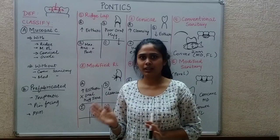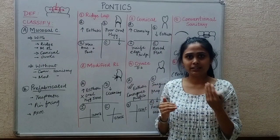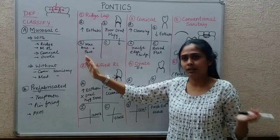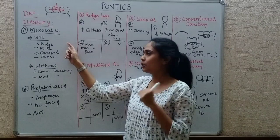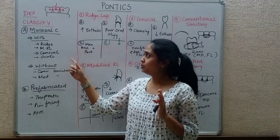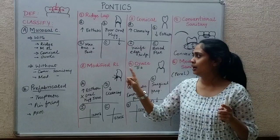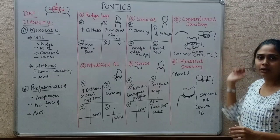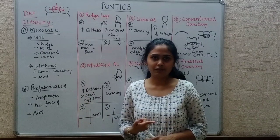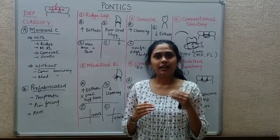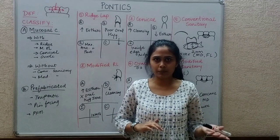Quick recap: the definition — it is an artificial tooth which replaces a missing tooth, restores its function, and fills the space previously filled by a natural tooth. Classification based on mucosal contact: with mucosal contact (ridge lap, modified ridge lap, conical, ovate) and without mucosal contact (conventional and modified sanitary). Prefabricated types include true pontic, pin facing (modified and reverse), and porcelain fused to metal.